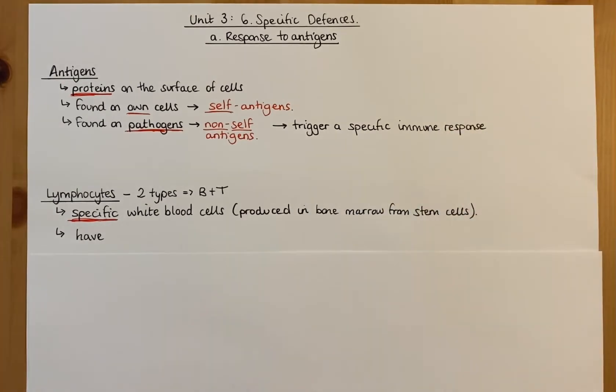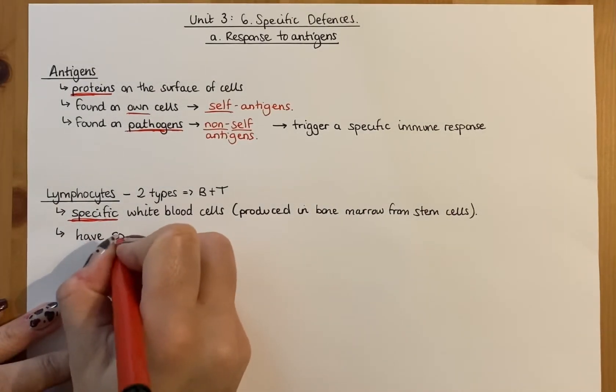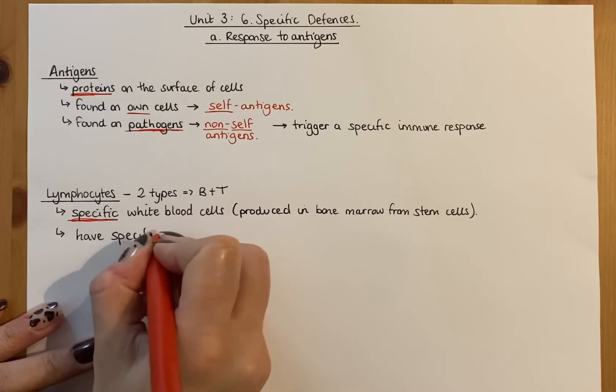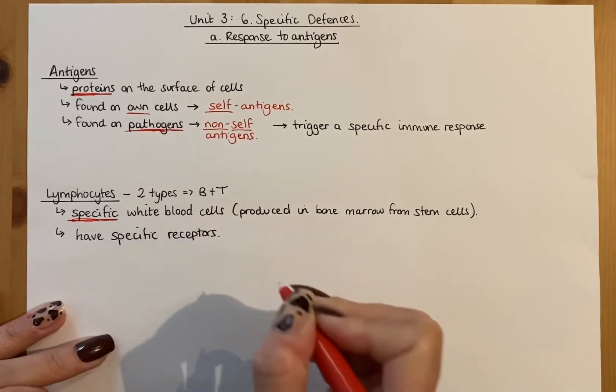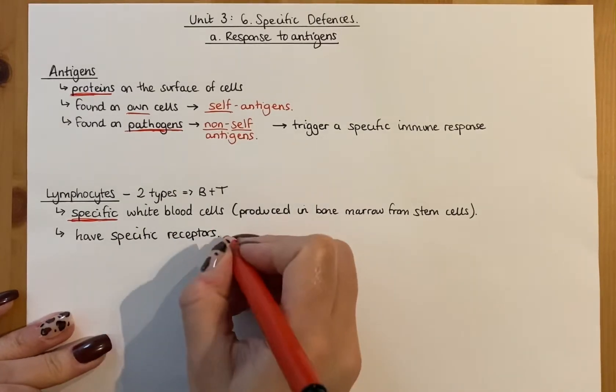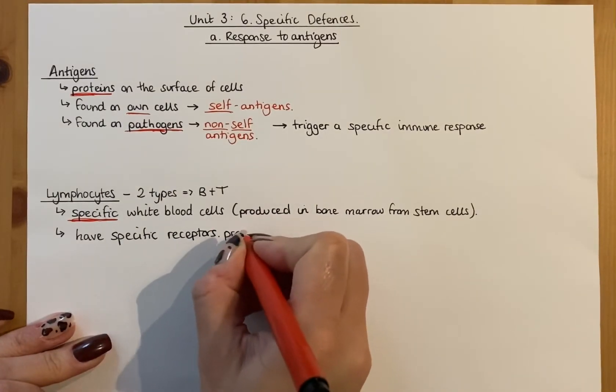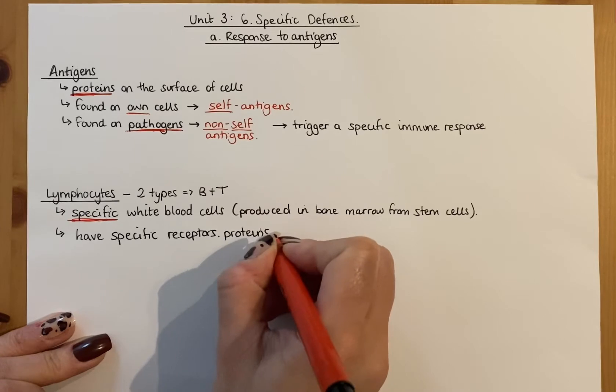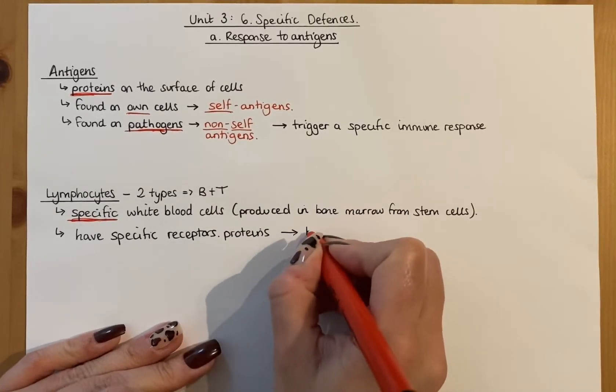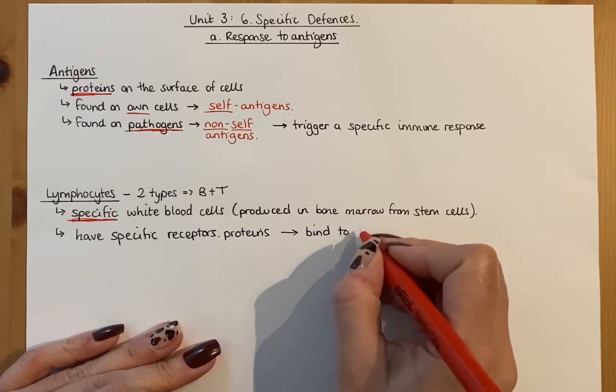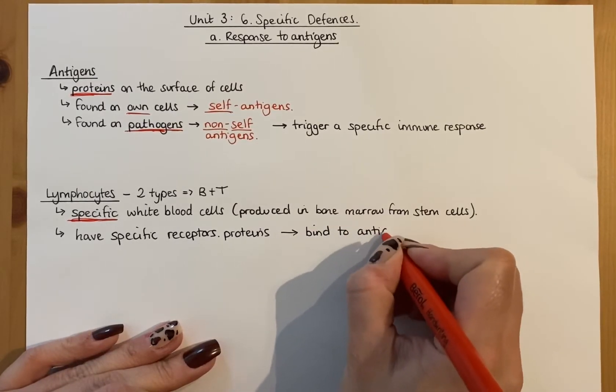Now what they have on them is really important. So these lymphocytes have specific receptors. Now if you think about your previous knowledge, these are receptor proteins because all receptors are made of proteins. These receptor proteins will bind to antigens on a foreign pathogen.